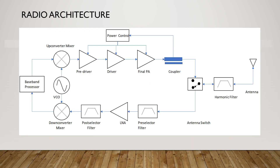Figure 4.1 shows the basic radio architecture. The basic RF radio system contains a baseband processor, up conversion mixer, down conversion mixer, voltage control oscillator or VCO, local oscillator or LO, frequency generating unit or FGU, pre-driver, driver, final power amplifier, coupler, power controller, antenna switch, harmonic filter, antenna, pre-selector filter, low noise amplifier or LNA, and post-selector filter.